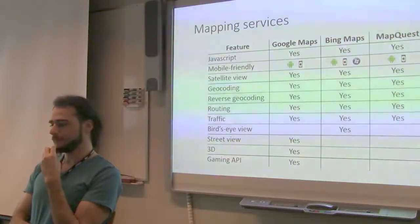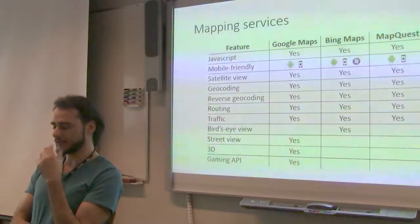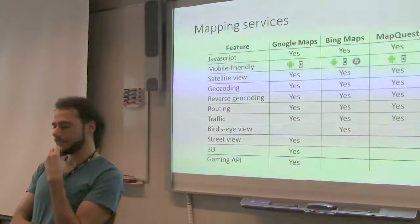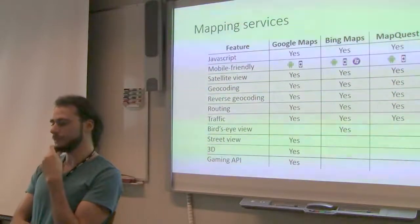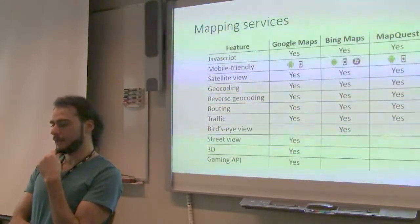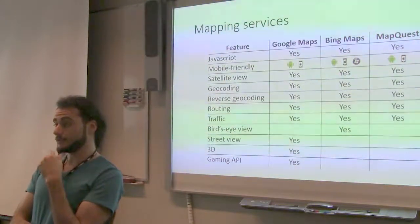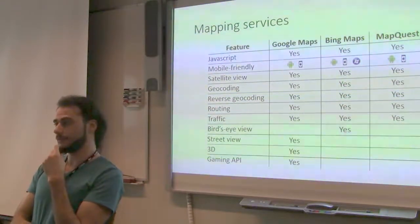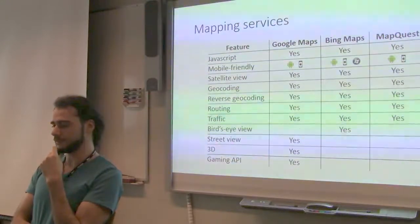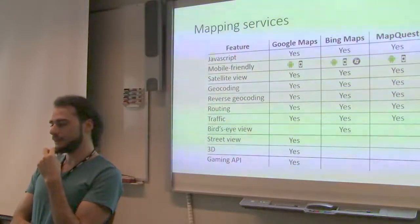Routing — like I mentioned with OSRM, these different map systems also have embedded routing, so directions inside of them. More recently, they started also having traffic information, so they can tell you if a place is crowded or not. And then we start to have more advanced features.